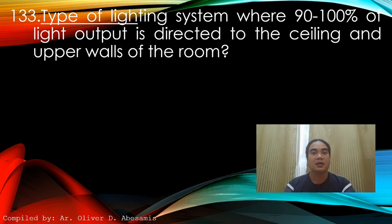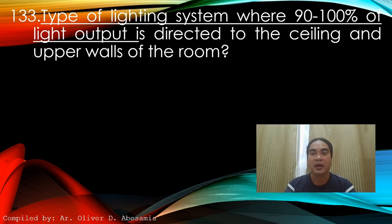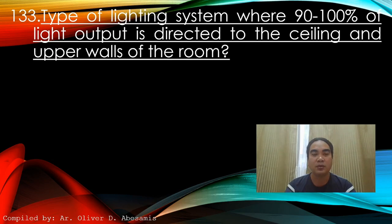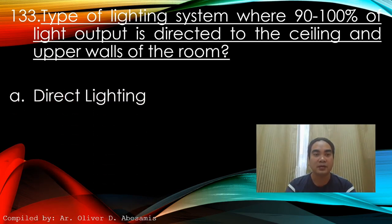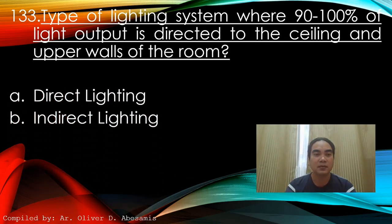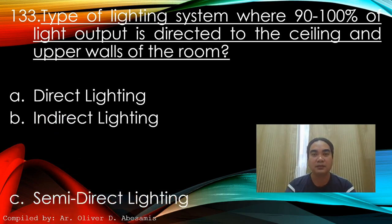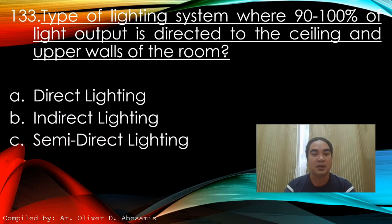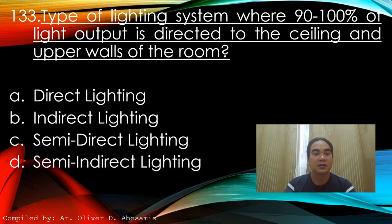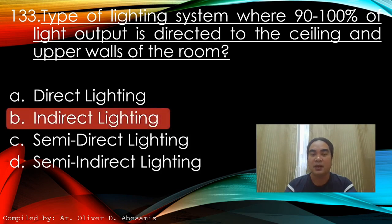Question 133: Type of lighting system where 90 to 100 percent of light output is directed to the ceiling and upper walls of the room. A) Direct lighting, B) Indirect lighting, C) Semi-direct lighting, D) Semi-indirect lighting. Answer: B) Indirect lighting.